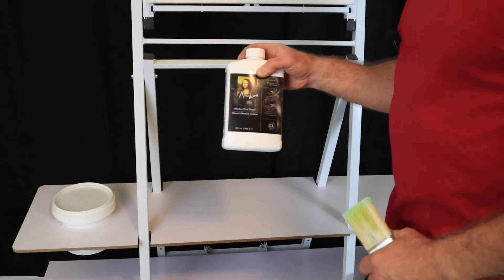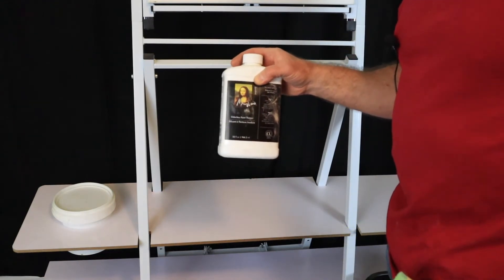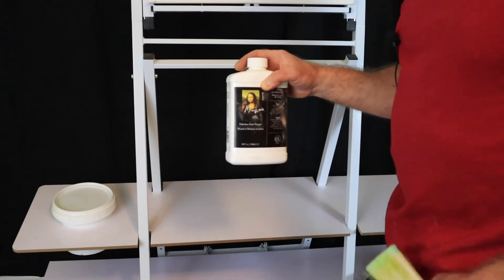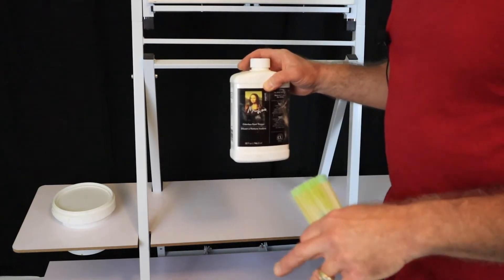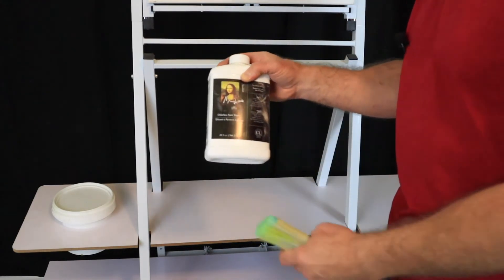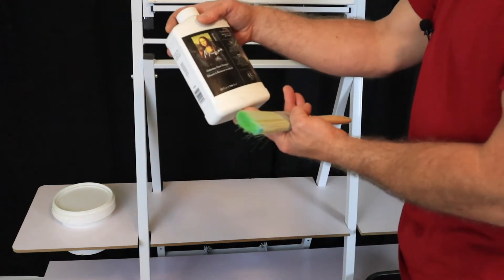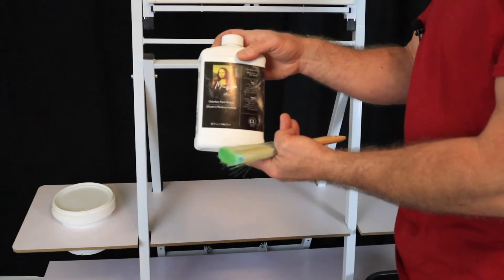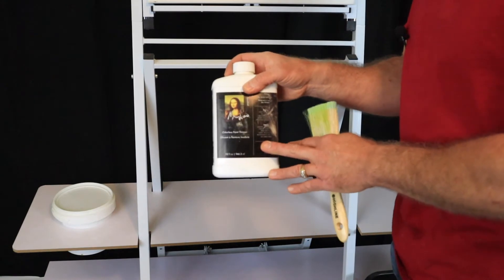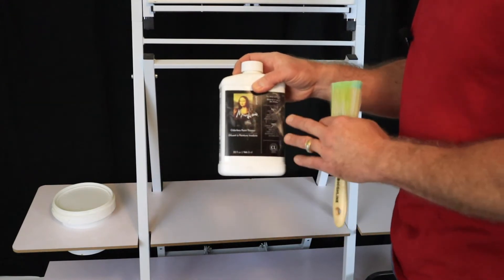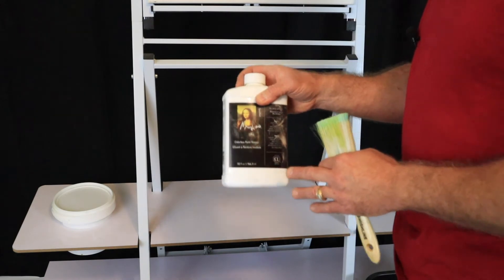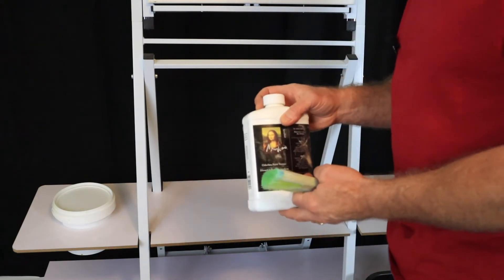Either of those two. Paint thinner would work and mineral spirits would work but you would be on the floor passed out from the fumes. So we're going to go with odorless paint thinner. This is by Mona Lisa. Bob Ross makes an odorless paint thinner. You can find different brands of the odorless paint thinner or odorless mineral spirits.